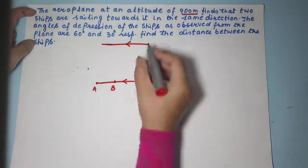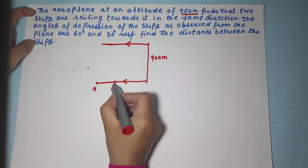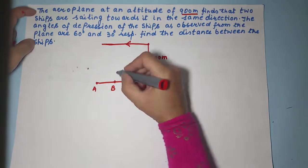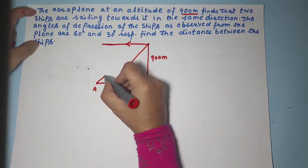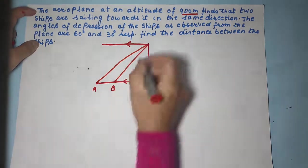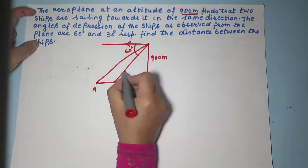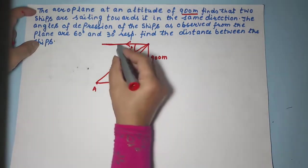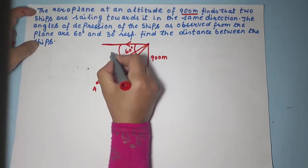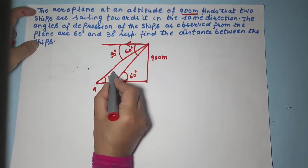That means when you look at these ships from the aeroplane the angles of depression are 60 degree and 30 degree. Does that mean this entire angle is 60 degree? That is why this angle is 60 degree, alternate angles.